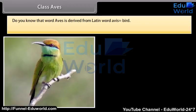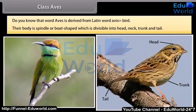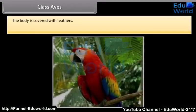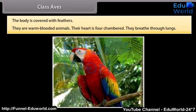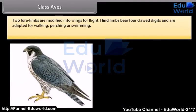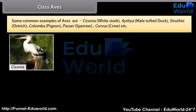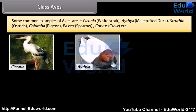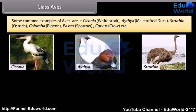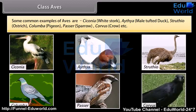Class Aves. The word Aves is derived from Latin word avis, meaning bird. Their body is spindle or boat-shaped, divisible into head, neck, trunk, and tail. The body is covered with feathers. They are warm-blooded animals. Their heart is four-chambered. They breathe through lungs. Two forelimbs are modified into wings for flight. Hind limbs bear four claw digits and are adapted for walking, perching, or swimming. They lay eggs having a calcareous shell. Some common examples are Ciconia (White Stork), Aythya (Tufted Duck), Struthio (Ostrich), Columba (Pigeon), Passer (Sparrow), and Corvus (Crow).